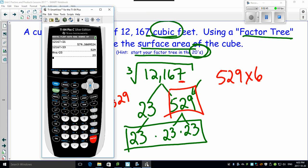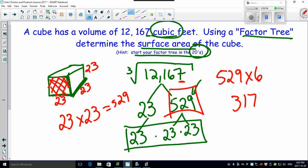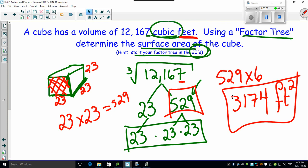Okay, so I'm going to take my 529 here, multiply it by six, and I get 3,174. And there is my surface area. Now, be careful. It's in feet. So that means surface area is in feet squared. And that's how you do one of these using a factor tree.